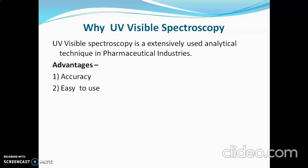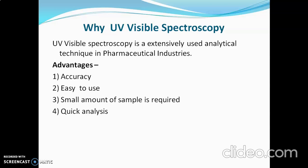It gives highly accurate results. The UV-visible spectrophotometer is a simple instrument and easy to use. A small amount of sample is required — generally in milligrams or even micrograms — and the technique is so sensitive it can detect samples in nanograms. The analysis time required is very short.